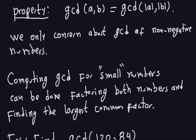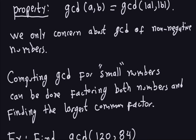Now, to compute the GCD, if we want to do it for small numbers, we can use the factorization of the numbers. The fundamental theorem of arithmetic, which we saw last time, says that we can do that for all integers. Computing the factorization is not usually an easy thing, but for small numbers it is usually very fast. So we're going to use the factorization of the integers to compute the greatest common divisor.